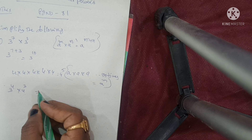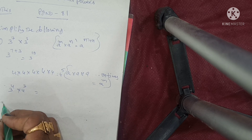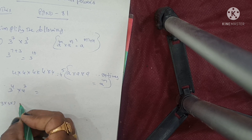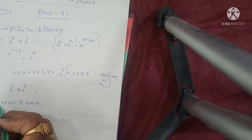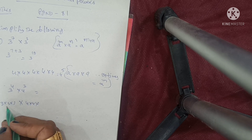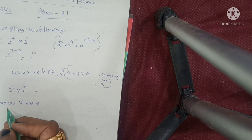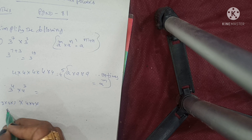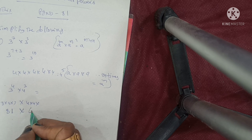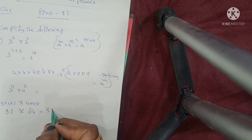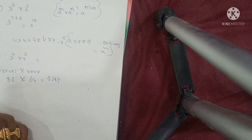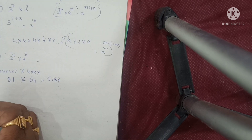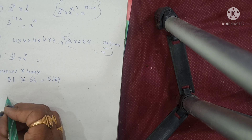3 power of 4 means 3 × 3 × 3 × 3 = 81, and 4 power of 3 means 4 × 4 × 4 = 64. So 81 into 64 is equal to 5184.